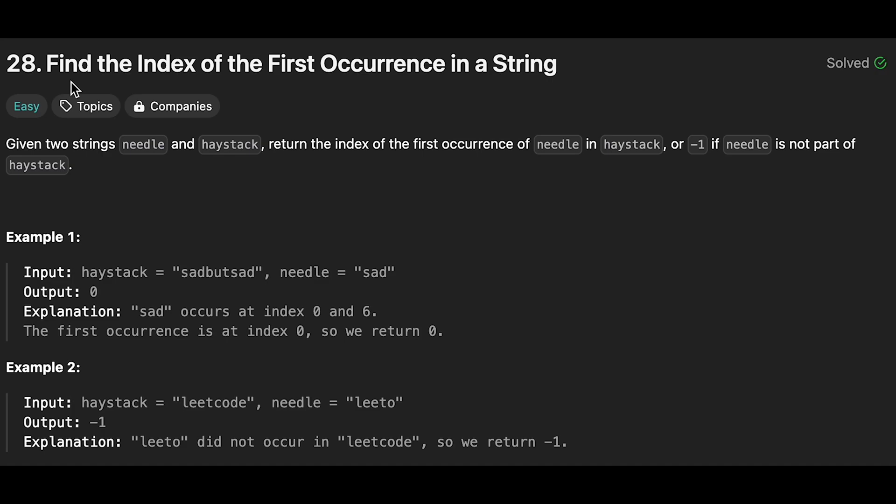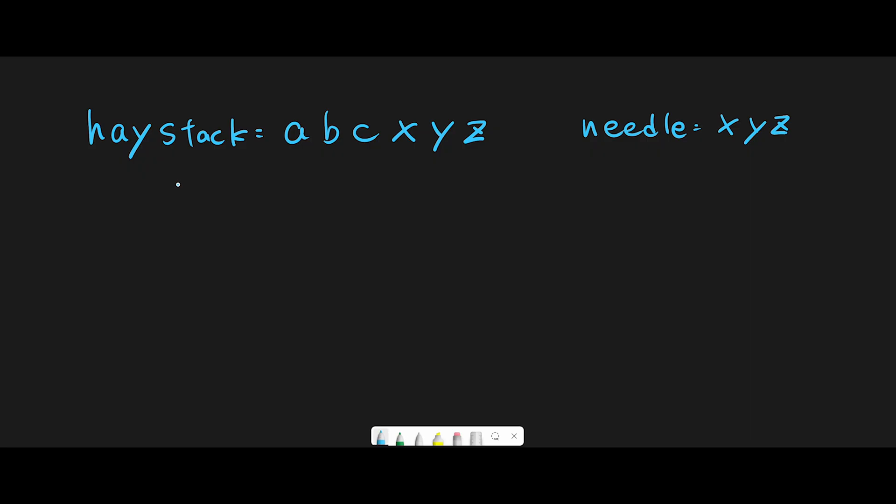Today we are going to solve the LeetCode question: find the index of the first occurrence in a string. Let me explain with this example. Haystack is 'abcxyz' and the needle is 'xyz'. For this question we have to return the index of first occurrence of needle in haystack, or return -1 if needle is not part of haystack.